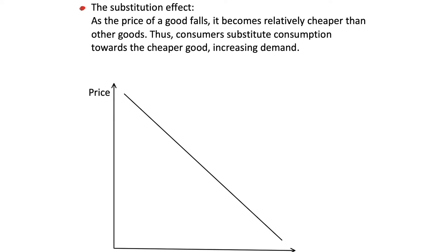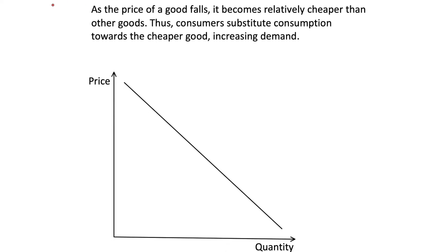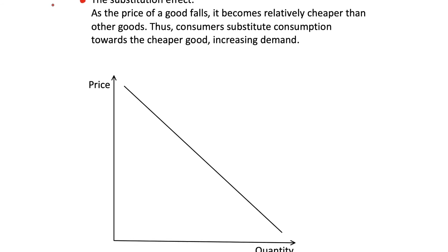The next effect we're going to consider is the substitution effect, which is very different but can equally explain a downward sloping demand curve. In the substitution effect, as the price of a good falls it becomes relatively cheaper than other goods, so consumers will substitute — and hence why it's called the substitution effect — consumption towards the cheaper good, increasing demand.